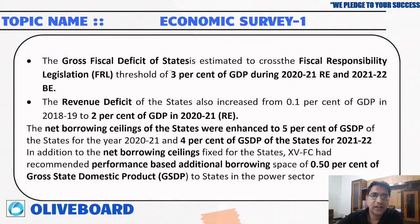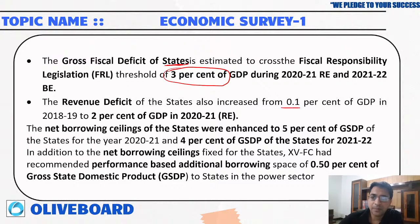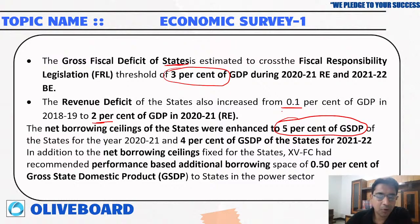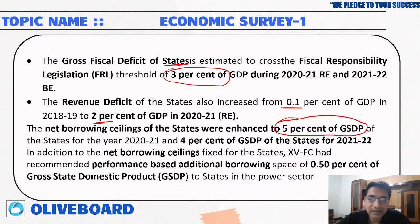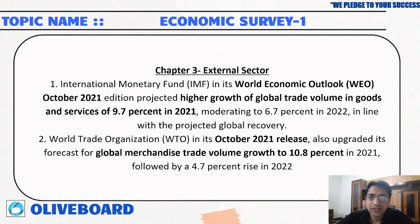Regarding gross fiscal deficit of states: a threshold of 3 percent has been given to all states. The revenue deficit of states increased from 0.1 percent to 2 percent of GDP. The net borrowing ceiling was also enhanced to 5 percent of GSDP. These limits were extended because due to COVID-19, states did not have sufficient resources, causing their gross fiscal deficits and revenue deficits to rise.